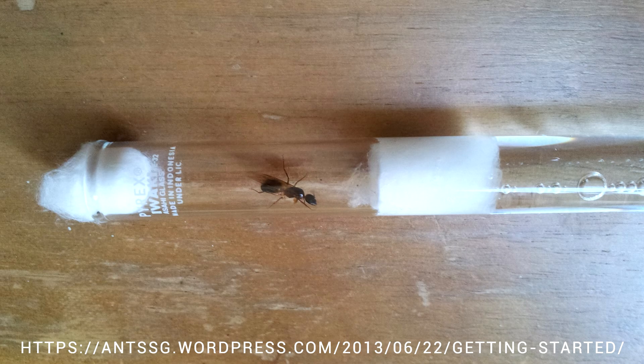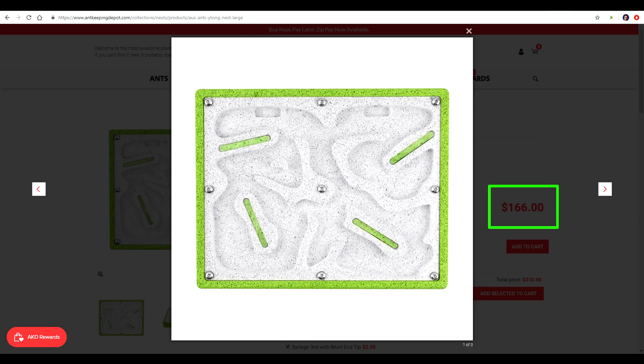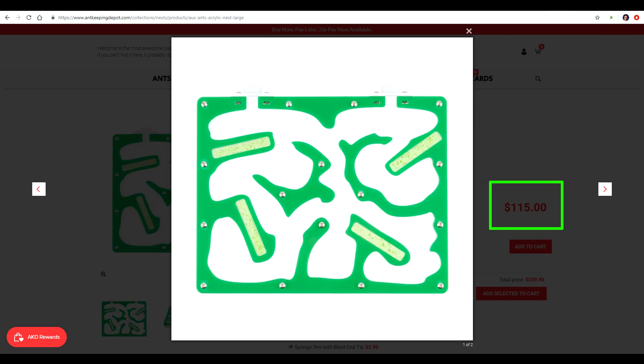Now queen ants are commonly stored in these test tubes. It looks really small but it mimics really well the tiny chamber they would have underground. When kept in the dark it's safe, secure and humid. Eventually however you will need a formicarium. This type of aerated concrete design is pretty common but definitely not very cheap. There's also CNC or laser cut acrylic models. Once again not exactly affordable.